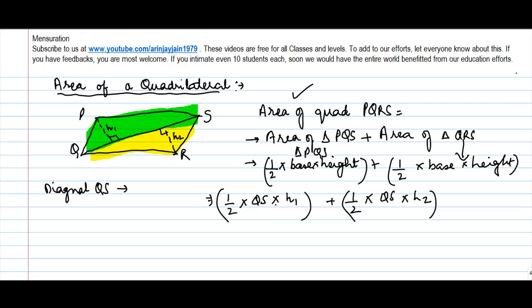Can we simplify this? Have a look at it. Yes, we can. We take 1 by 2 into QS as common, and then write H1 plus H2. Because H1 is here. So, once this has moved out, you multiply this by H1 plus 1 by 2 into QS. Again, this is common, into H2.